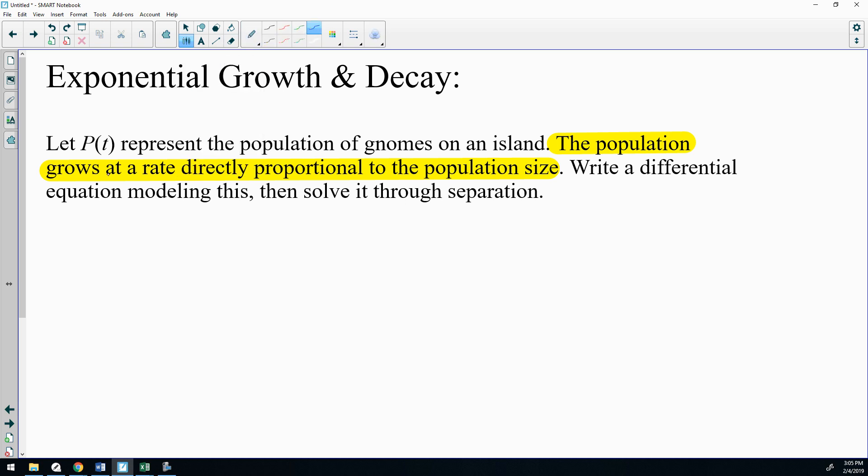So the population grows at a rate, which means we're talking about P prime. The rate of growth is directly proportional, so it's some constant multiple of the population size, which was defined as P(t). So P'(t) equals kP(t). That is your differential equation. Now solving it through separation, rather than P'(t), I would rather write dP/dt equals kP. To solve that through separation, we would divide by the P, so dP/P equals k dt.